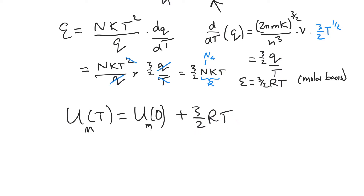Notice this is exactly the same result from the equipartition theorem. For each quadratic mode, there is a 1/2 RT contribution to the energy. Since we've got three directions the particle can move along, the kinetic energy is 1/2 m v_x² + 1/2 m v_y² + 1/2 m v_z². That's three lots of 1/2 RT, giving us exactly the same expression — which is encouraging.